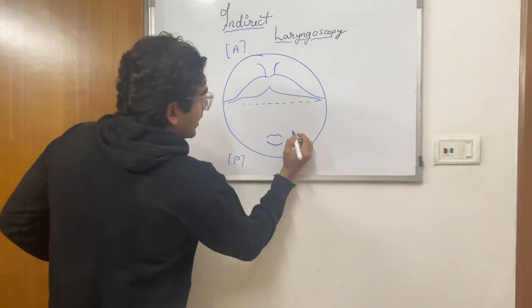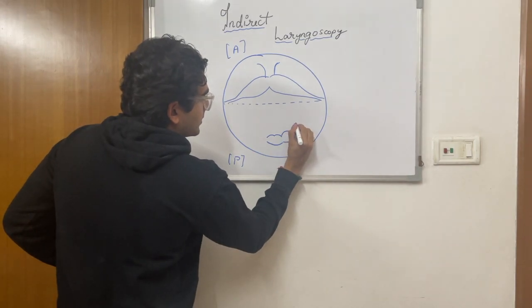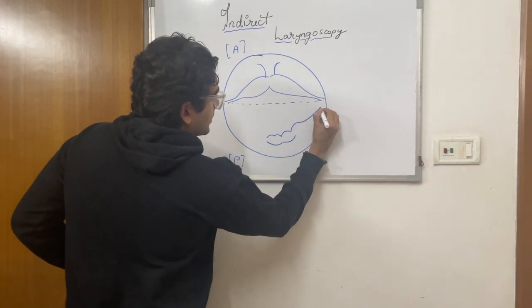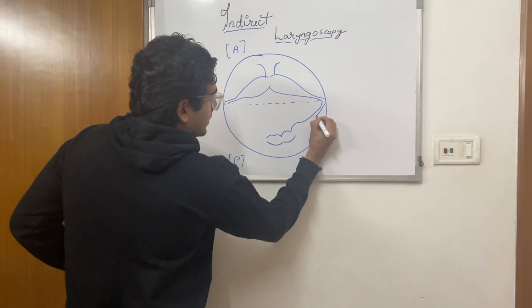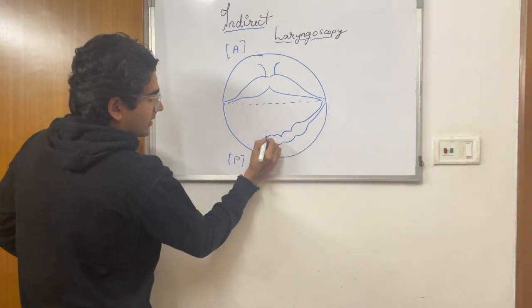And from there, the cricoarytenoid joints are formed. Again, the post-cricoid region and the cricoarytenoid joint.